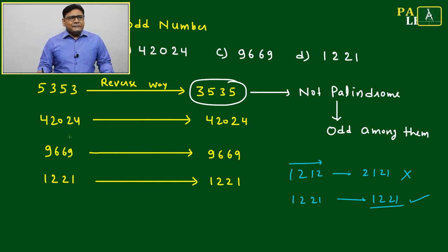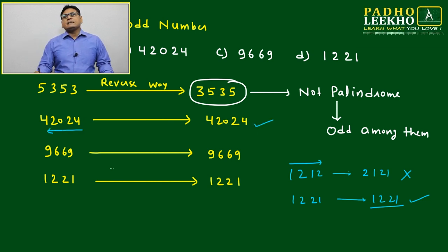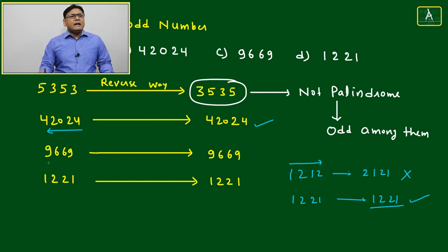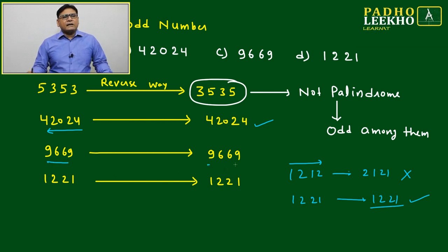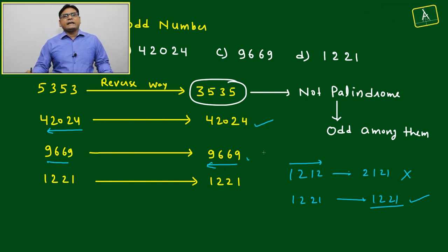Now check the remaining numbers. 42024, if you are writing from this to this, 42024, it is the same number. It is a palindrome. 9669, again writing from this to this, you are getting the same number. That is also a palindrome.